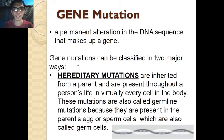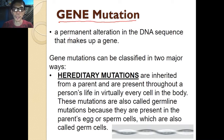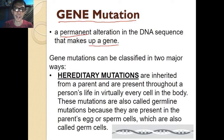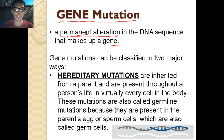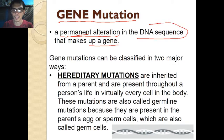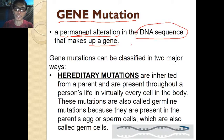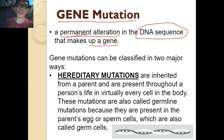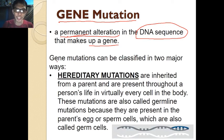On the other hand, we have gene mutation. Gene mutation is the permanent alteration in the DNA sequence that makes up a gene — not temporary, but a permanent alteration. Unlike chromosomal mutation which occurs at the chromosome level, gene mutation goes directly into the DNA molecule. Gene mutation can be classified into two types.